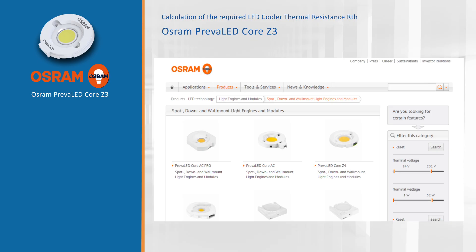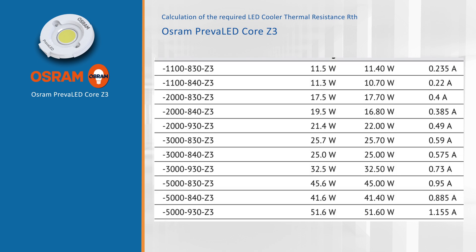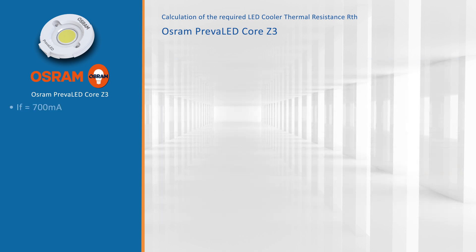Let's first look at the thermal performance. As an example, we are going to design a shop light here with the Osram Prevalet Core Z3 3000 lumen. If we look in the datasheets of the Osram Prevalet Core, we see that this module is driven at 0.73 amps. In our case we will use a commercial value of 700 milliamps and a forward voltage of 45 volts DC. That makes a nominal wattage of 31.5 watts.